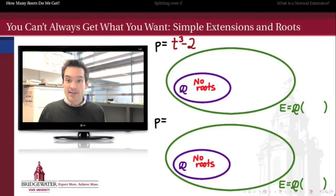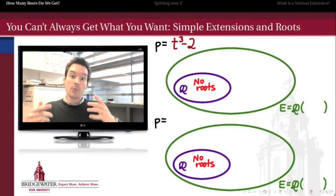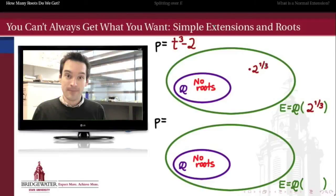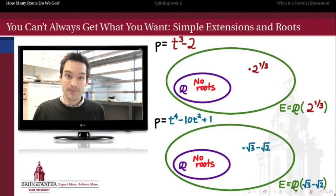The first example: t³ - 2 is irreducible over the rationals and therefore has no rational root. If we extend to include the real cube root of 2 inside of an extension of the rationals, then we at least get a root of p. Meanwhile, t⁴ - 10t² + 1 is also irreducible over the rationals and therefore has no rational root. If we extend by √3 - √2 in that extended field, we at least get a root.